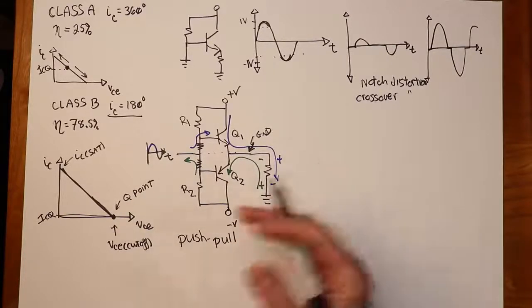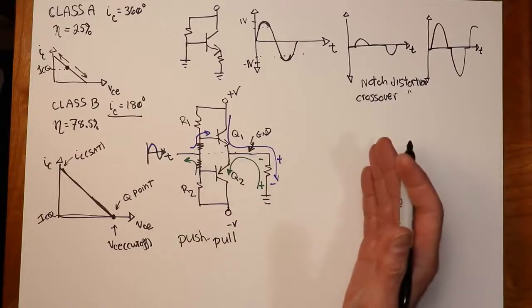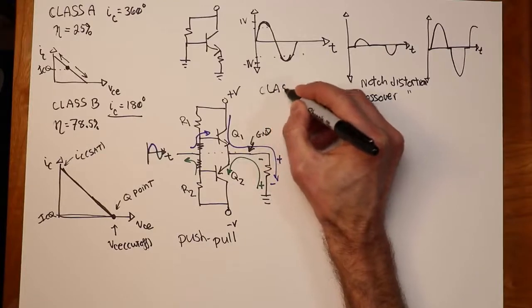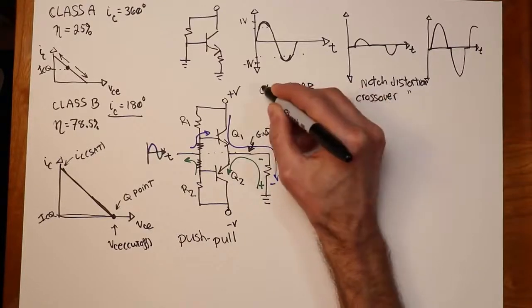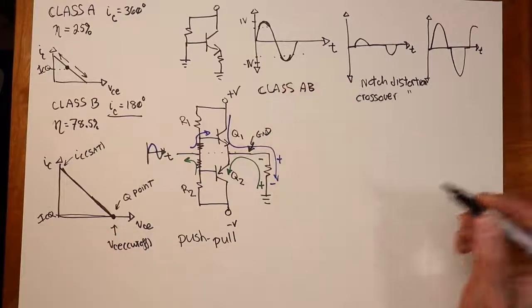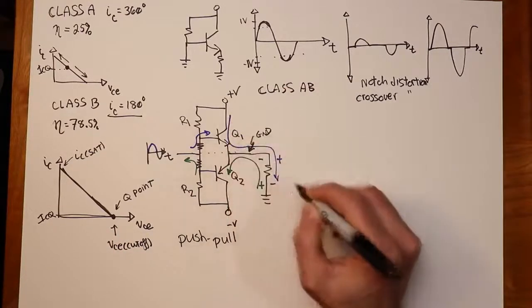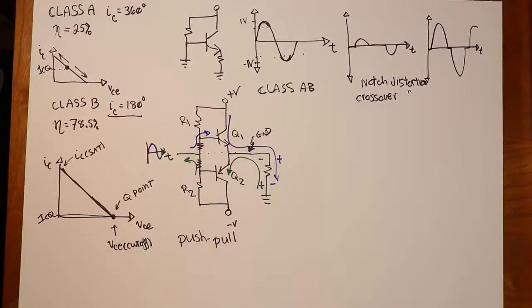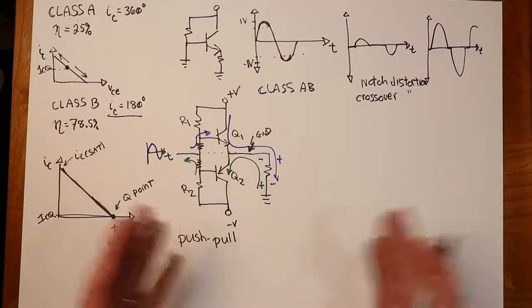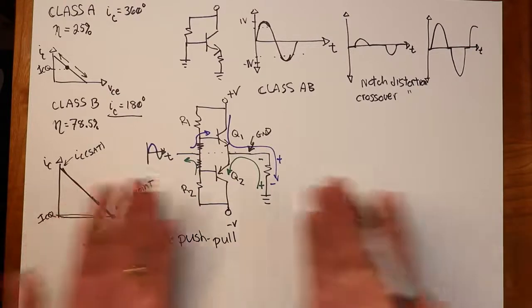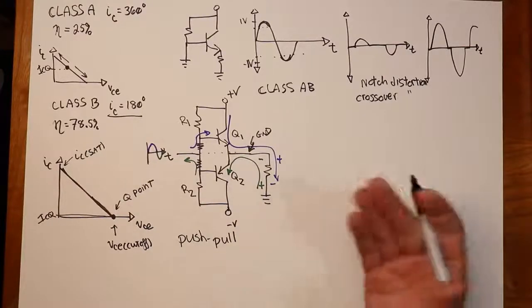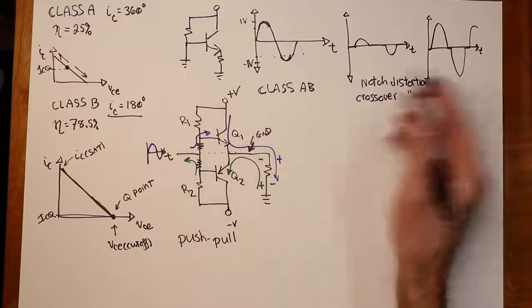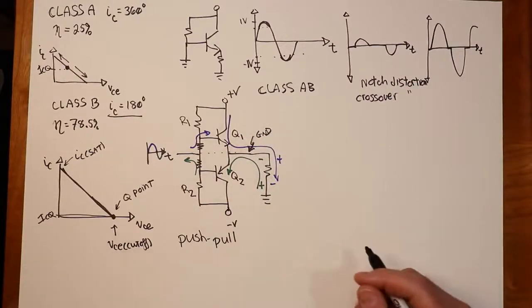People will sometimes, to distinguish between that sort of operation and this true class B, they'll sometimes call that class AB. It's really just a corrected class B. You have this little trickle bias, this idling. It's like a gasoline engine car - when you stop at a stoplight, the engine doesn't turn off completely, it's idling. It's running at a low RPM. So it's the same kind of deal here. You have a little idle current to prevent this sort of notch distortion, or at least mitigate it, reduce it considerably.